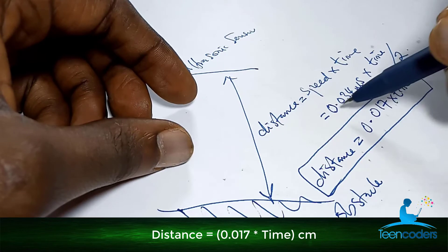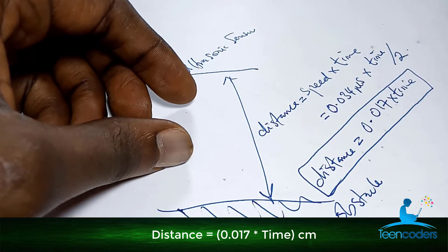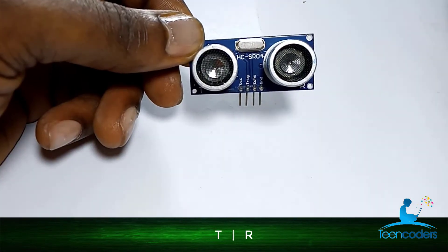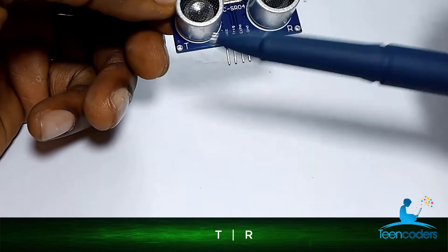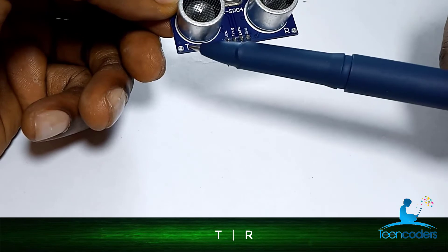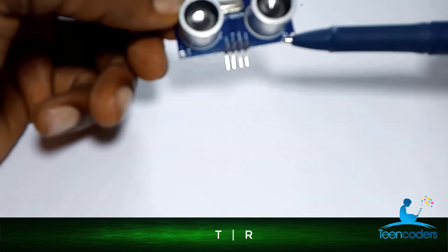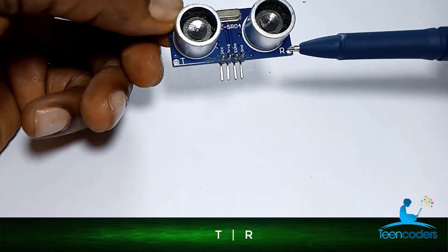This 0.017 is 0.034 divided by 2. For this particular model of the ultrasonic sensor, the HC-SRO04, you can see we have this point, which is the transmitter, and we have this other one, the arrow, which is the receiver.